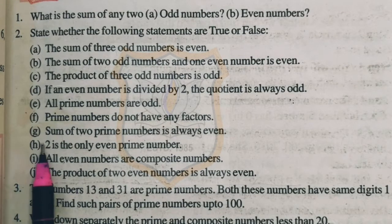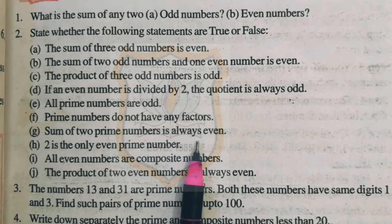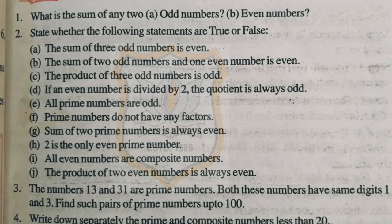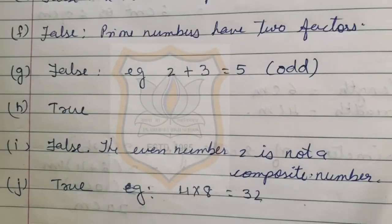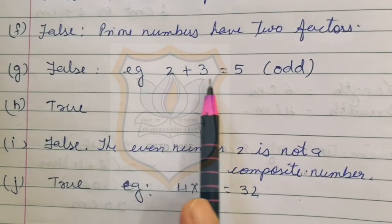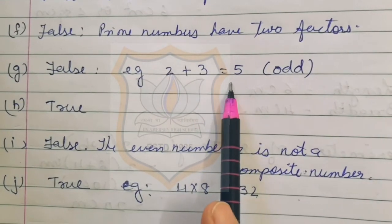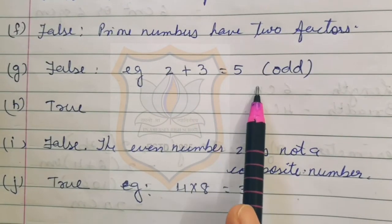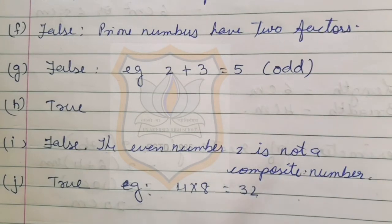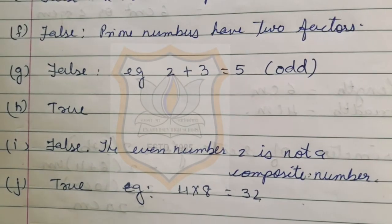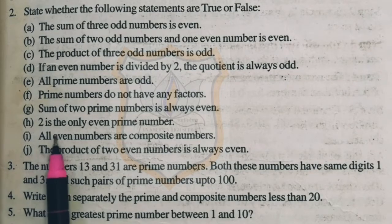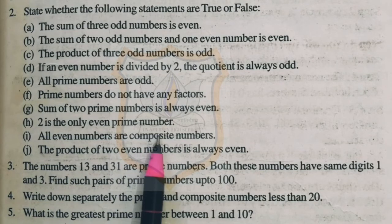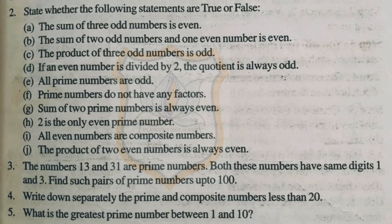Part G: the sum of two prime numbers is always even. The answer is false. For example, if we take prime numbers 2 and 3 and add them, we get 5, which is an odd number. So it is not always the case that the sum of two prime numbers is even. Part H: 2 is the only even prime number. The answer is true. 2 is the only even number which is prime; the rest of the even numbers are composite numbers.